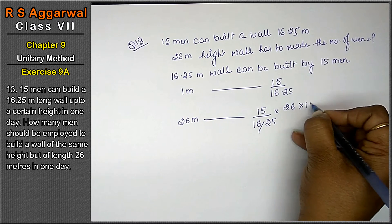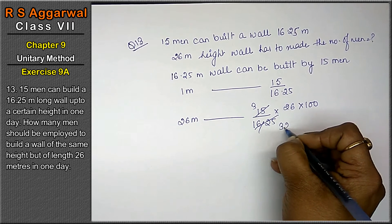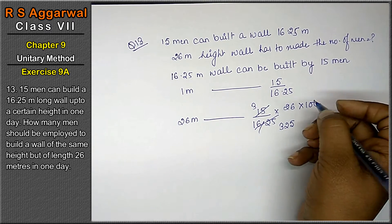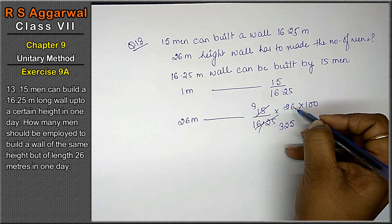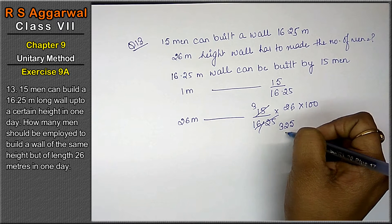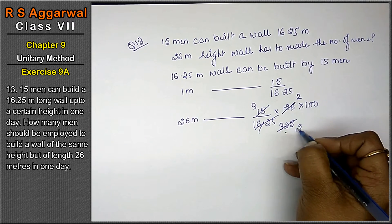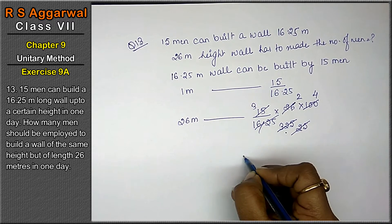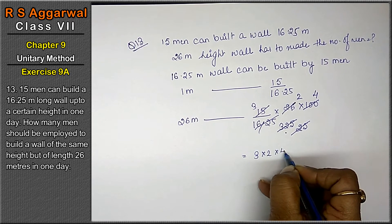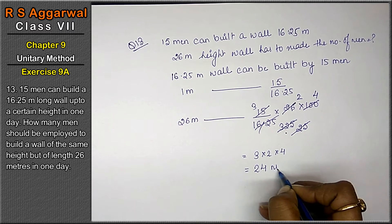Multiplying by 100 to remove the decimal: 15 into 26 into 100 upon 1625. Simplifying — 26 divided by 2 is 13, 1625 divided by 25 is 65, 65 divided by 13 is 5, 15 divided by 5 is 3, and 100 divided by 25 is 4. So 3 into 2 into 4 equals 24. Therefore, 24 men are required.